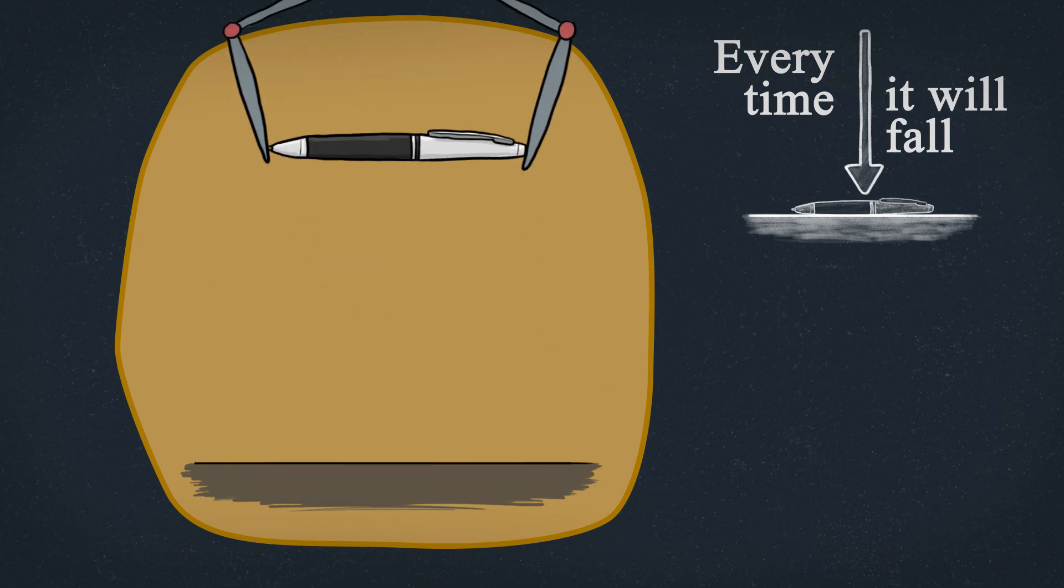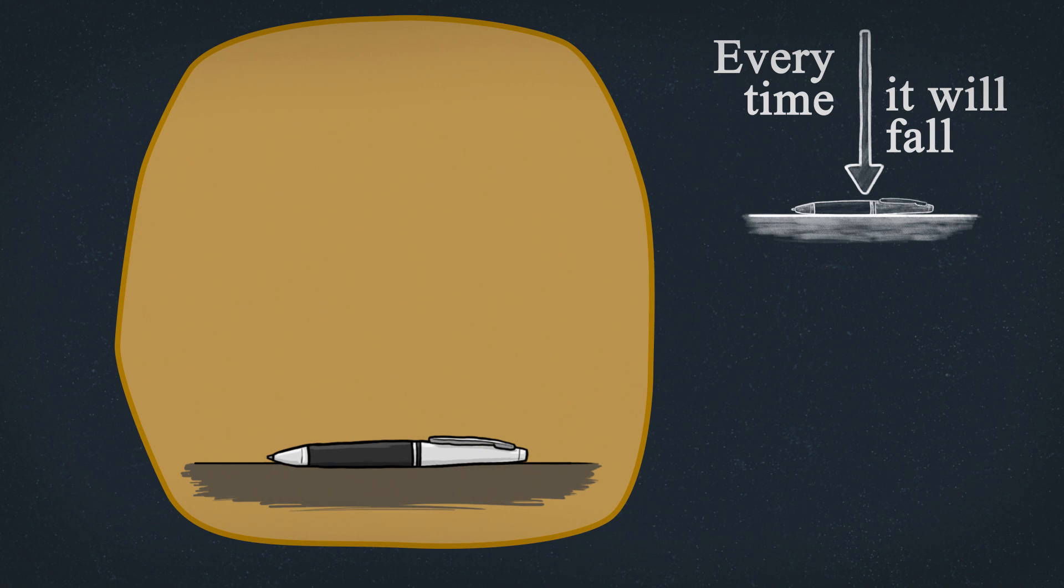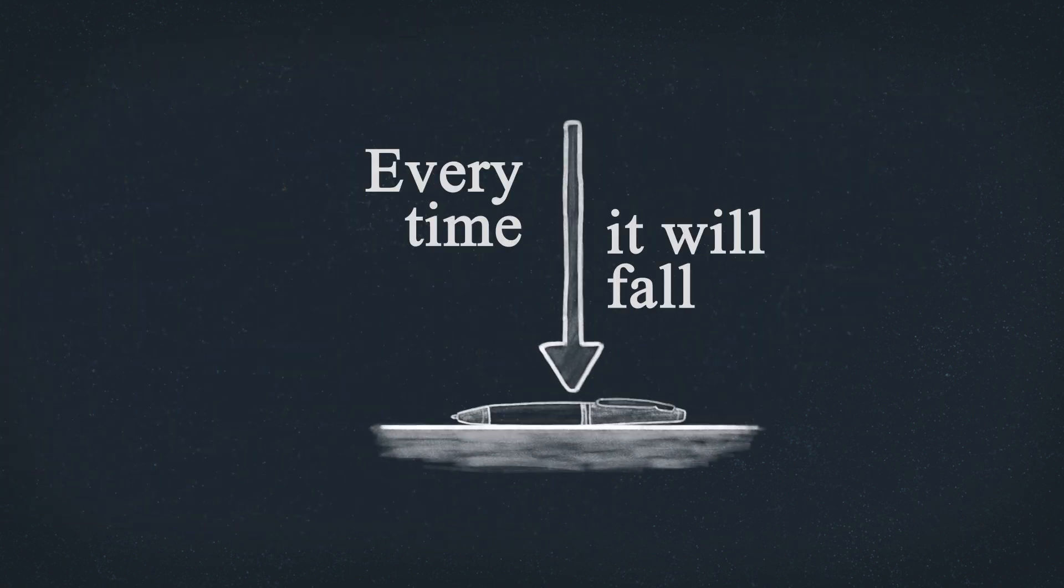But at the same time, the pen falling seems to be very consistent. And we've never seen something else happen. Maybe we just treat it as though it were true, since it's so universally predictive. But remembering in the back of our mind, observations are the way that we know stuff. And we can't literally see all of this idea.